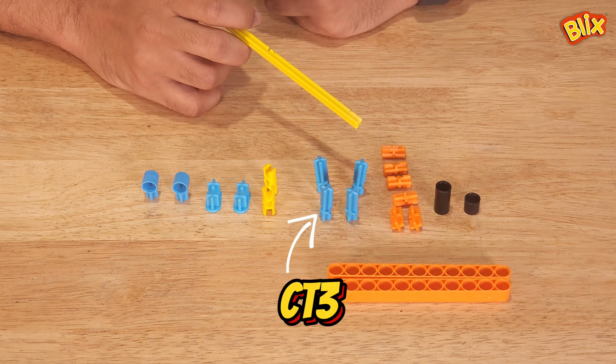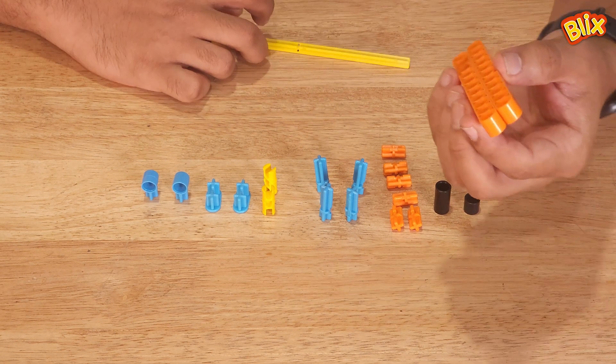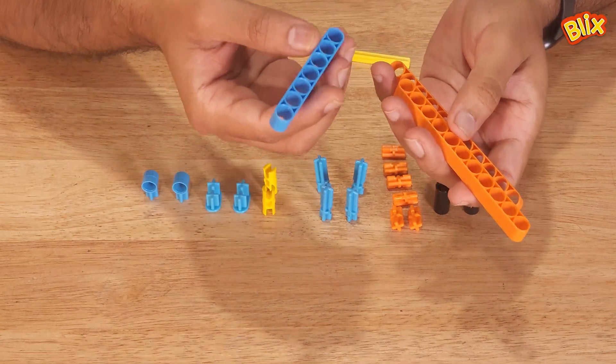The next connector is called CT3. This connector is used to connect three pieces together. Let's see how. Again, we have two P11s. Suppose we take one more pillar, this piece is called P7.